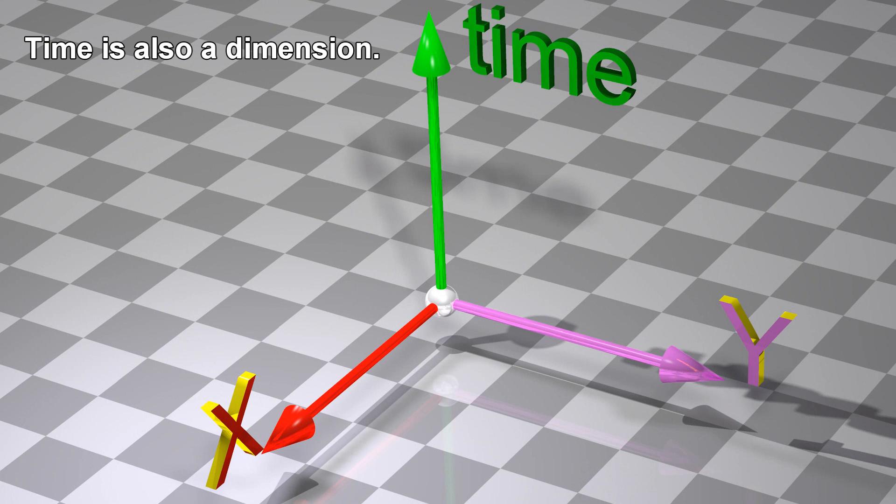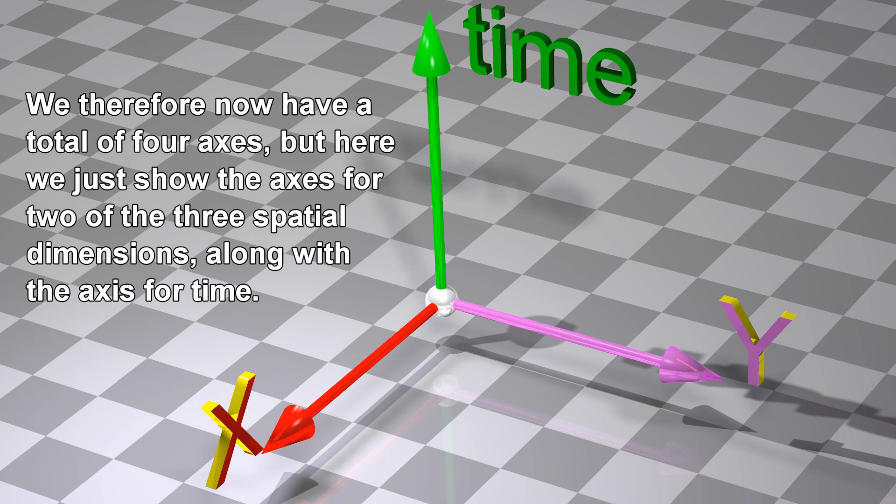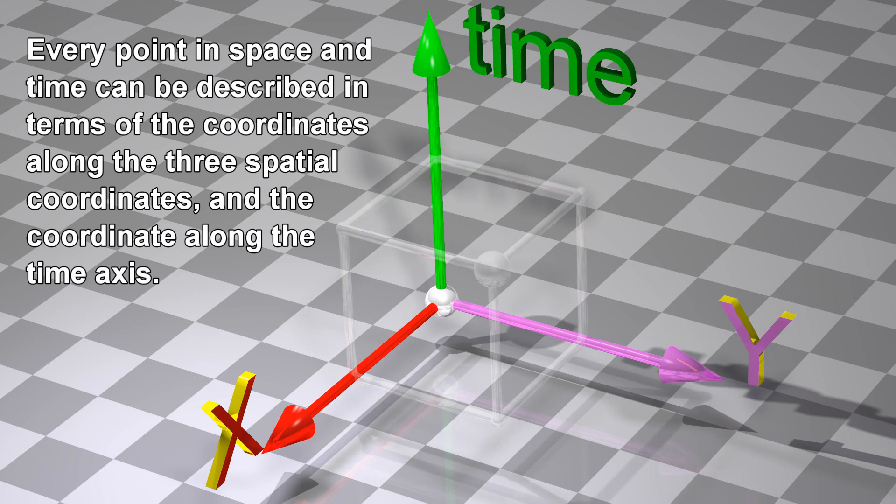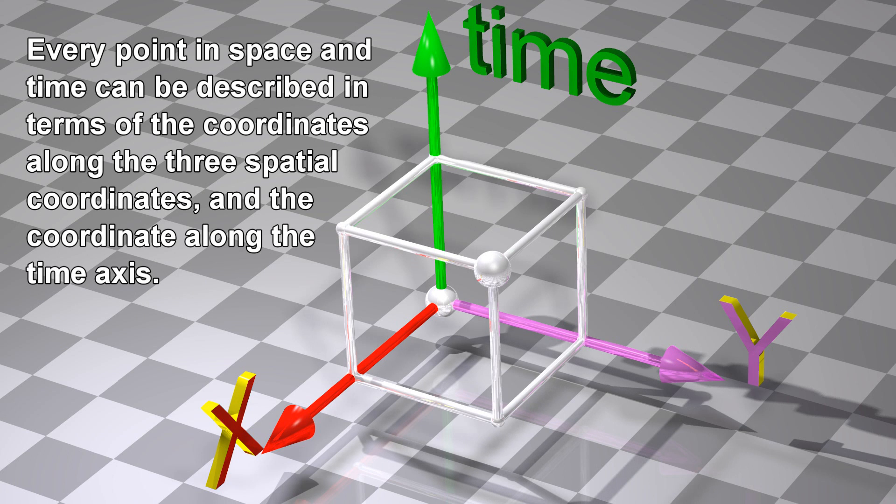Time is also a dimension. We therefore now have a total of four axes, but here we just show the axes for two of the three spatial dimensions, along with the axes for time. Every point in space and time can be described in terms of the coordinates along the three spatial coordinates and the coordinate along the time axis.